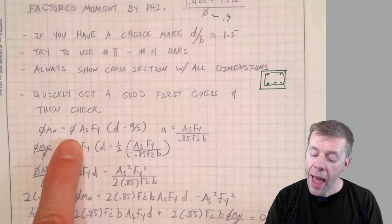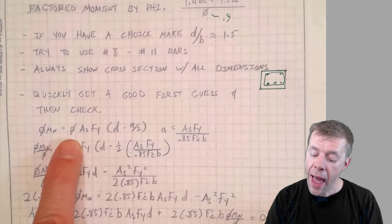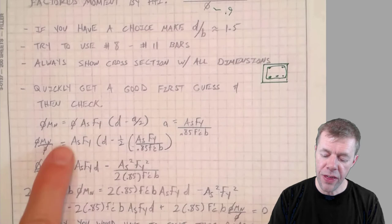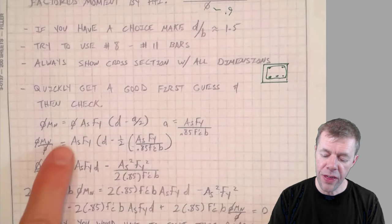And this a, we know, is equal to As·fy divided by 0.85·f'c·b. Now I'm going to show you some algebra here. We're going to plug this equation in for a, and we're going to divide by phi and move it over here, and then we're going to do some more algebra.